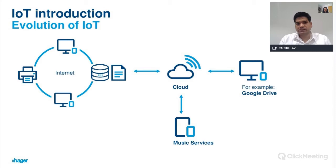As we started networking of personal computers, printers and servers through the internet to share and store information, later we started using cloud services to store files instead of a local drive, and music services to listen to songs without downloading them. This evolution created a huge demand for interconnected systems, one of which is IoT.